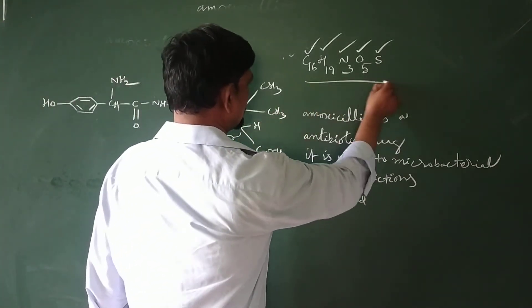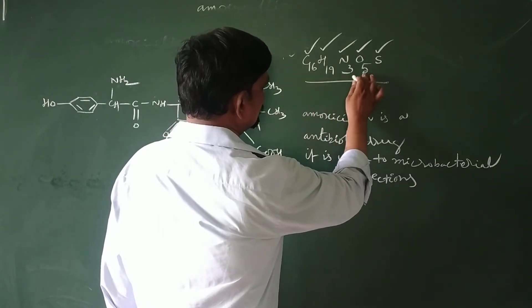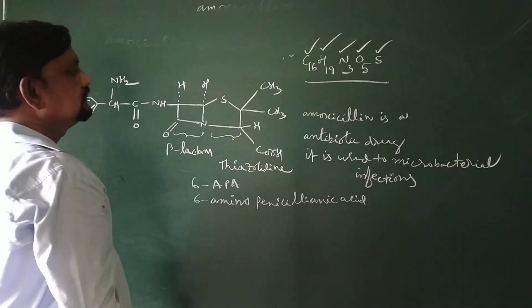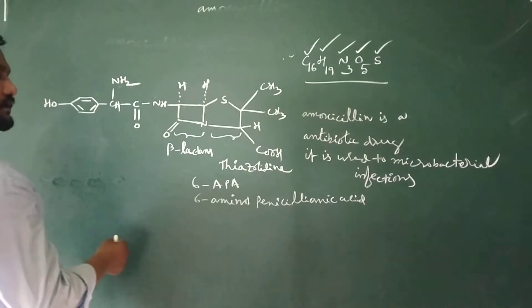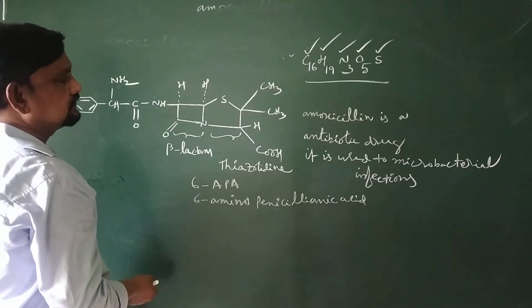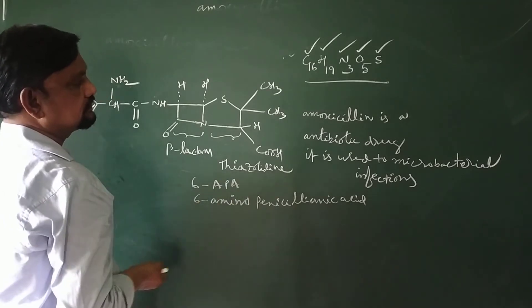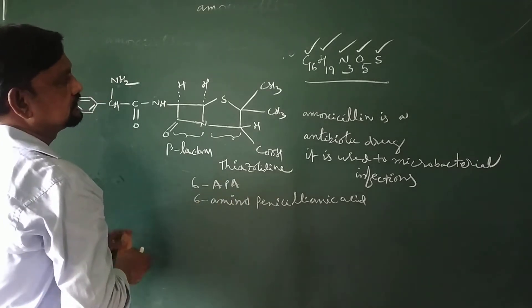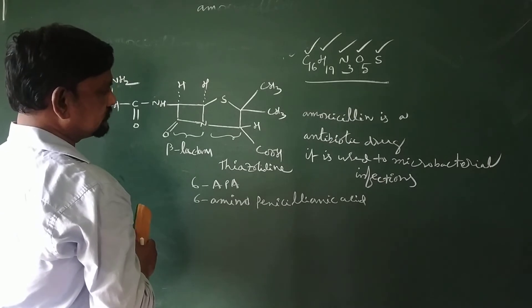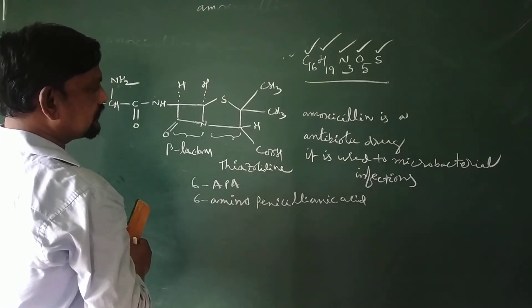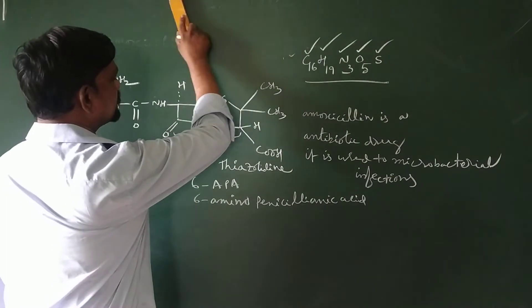Amoxicillin molecular formula: C16, H19, N3, O5, S. The main amoxicillin drug is used as a combination treatment for symptoms including stomach pain or ache syndrome, and the main combination of the amoxicillin drug is used for patients.